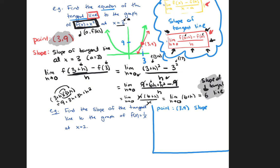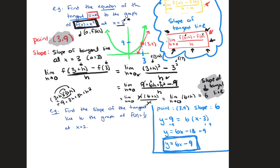With point (3, 9) and slope 6, using point-slope form: y minus 9 equals 6 times (x minus 3). Distributing gives 6x minus 18, and adding 9 to both sides gives y equals 6x minus 9. That is the equation of the tangent line to f(x) equals x squared at the point (3, 9).